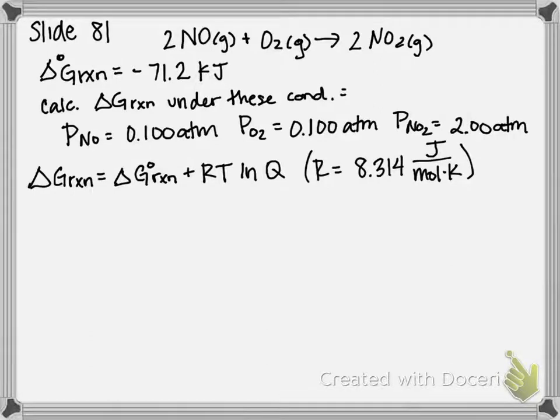This is the example on slide 81 of our chapter 19 PowerPoint, and it states: consider the reaction at 298 Kelvin, 2NO + O2 gives you 2NO2, and then it proceeds to give you a standard Gibbs free energy of reaction.